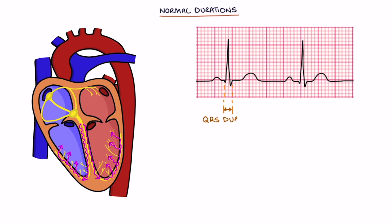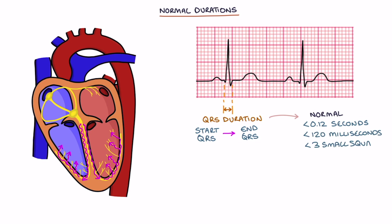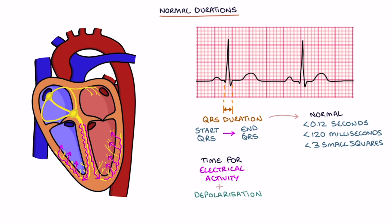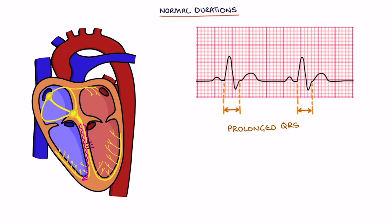The QRS duration is from the start to the end of the QRS complex. It normally lasts less than 0.12 seconds, or 120 milliseconds, or 3 small squares. The QRS duration represents the time it takes for electrical activity to spread and depolarization to occur in the ventricles. A prolonged QRS duration occurs in bundle branch block, where the left or right bundle branch has delayed or blocked conduction.